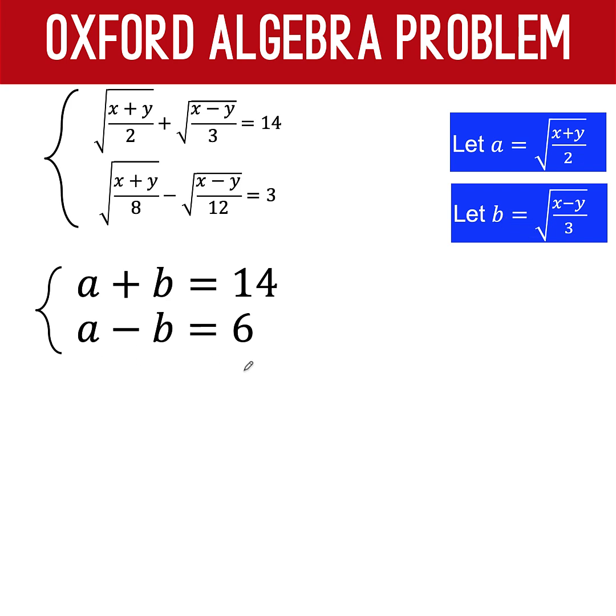This is easier to solve using now elimination method. We add these two equations. So, a plus a gives us 2a. 14 plus 6 equals 20. b plus negative b is 0. So, we did not write the variable b anymore. And divide both sides by 2 to get a equals 10.